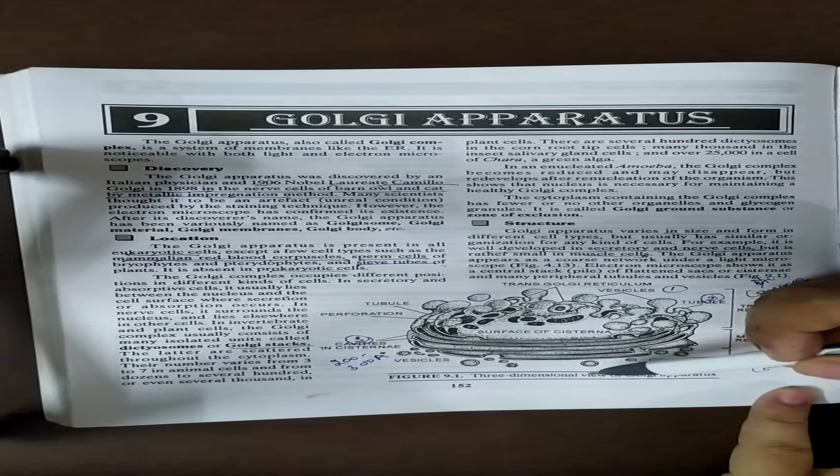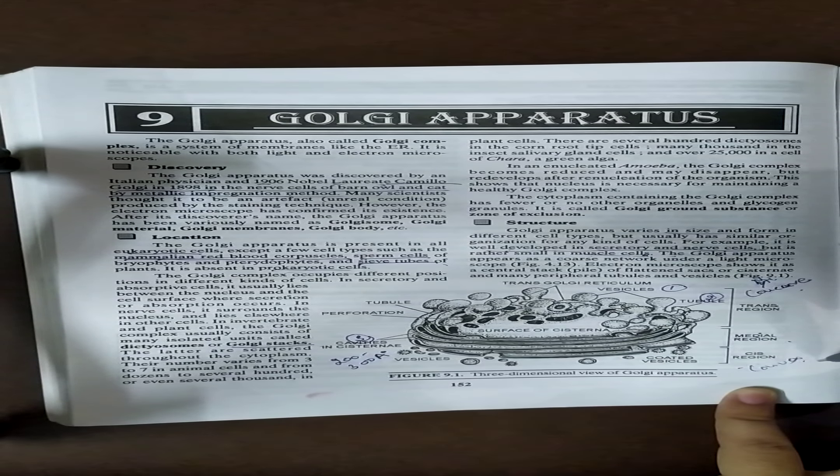Now comes to the structure of the Golgi apparatus. Here you can refer the figure 9.1. In this figure there are 2-3 faces of the Golgi bodies. The first face is the trans region, then the median region and the last one is the cis region. The trans region will behave like a concave mirror and the cis region will behave like a convex mirror.